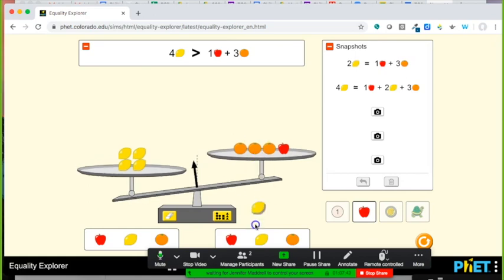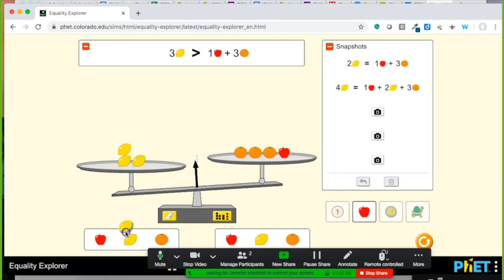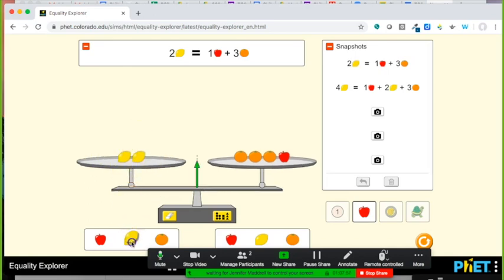But there's multiple ways of actually answering this question based on the information that we know. So I'm going to remove those lemons and we're going to keep it the same and say, okay class, since we had equality before with two lemons equals three oranges and one apple...